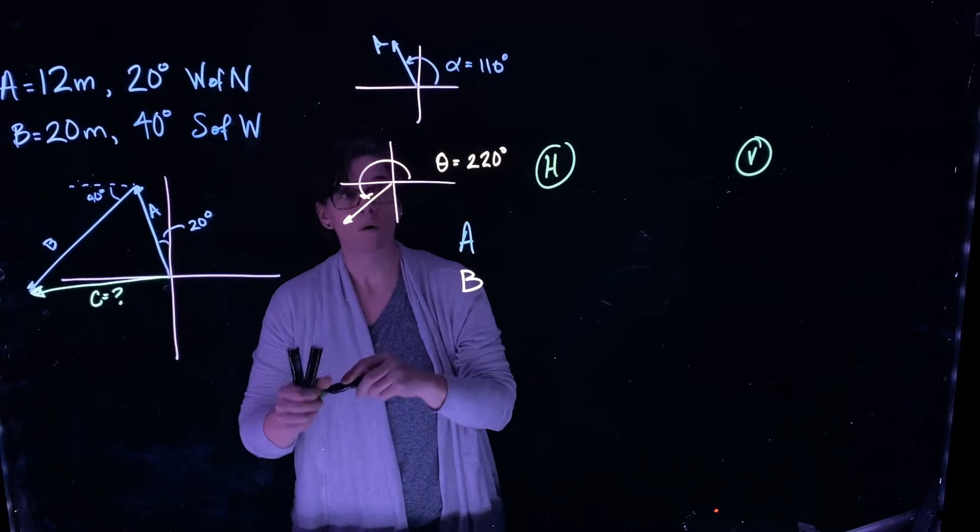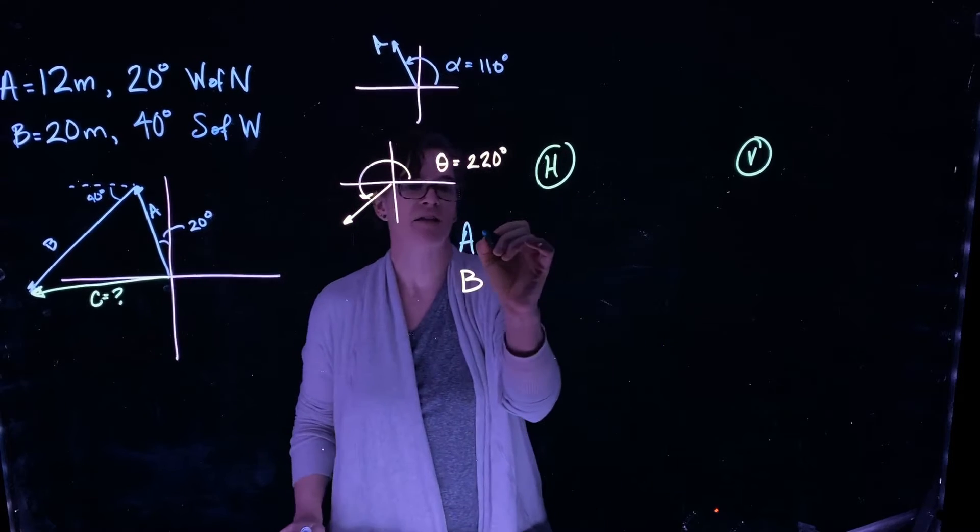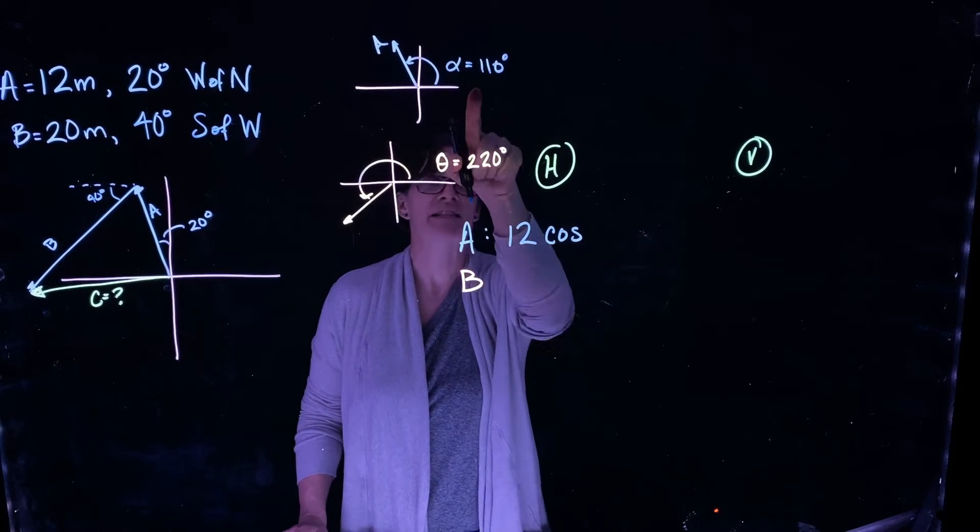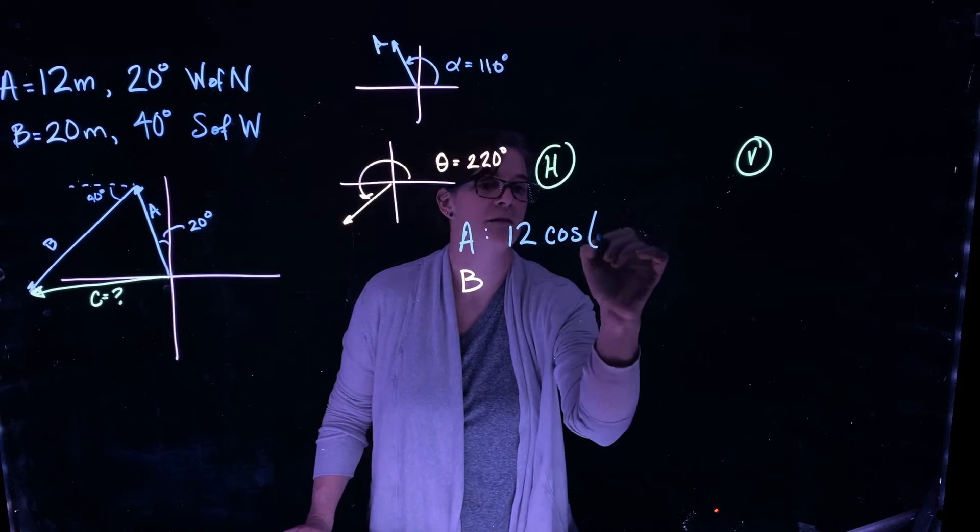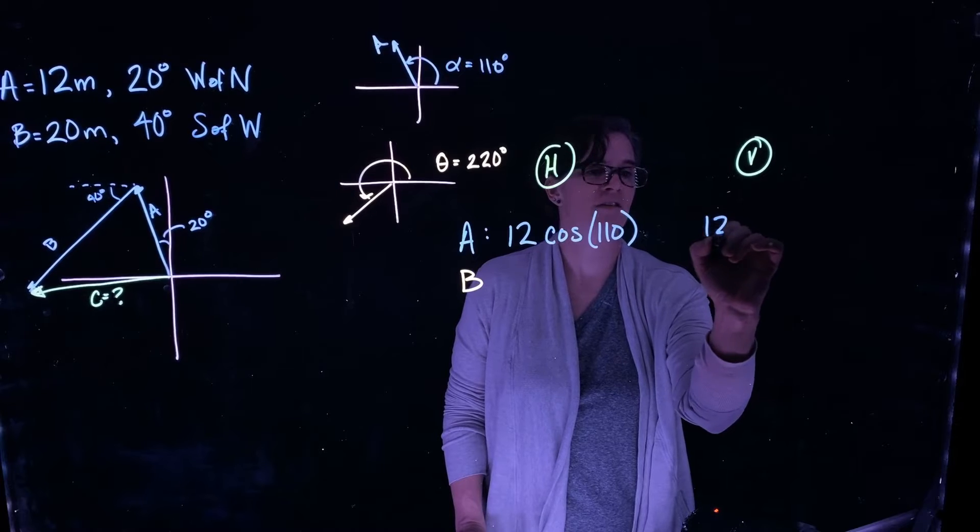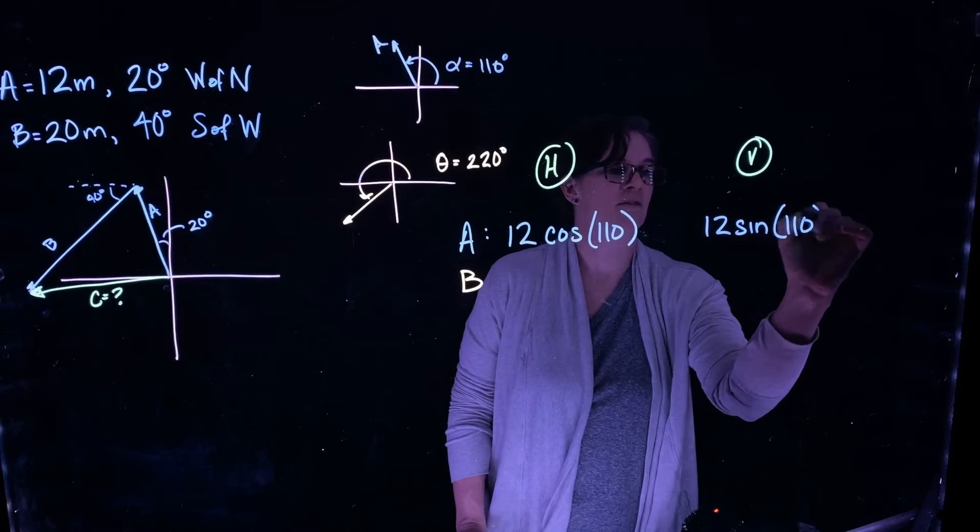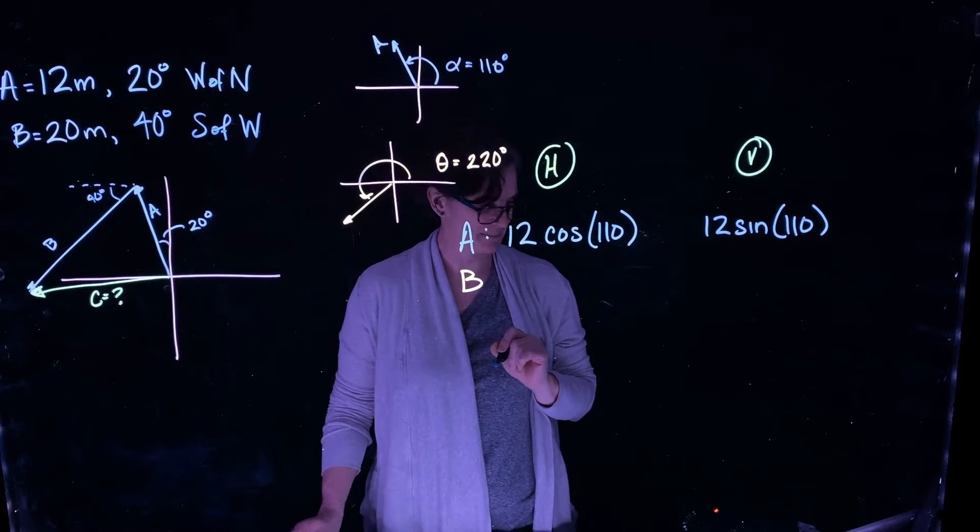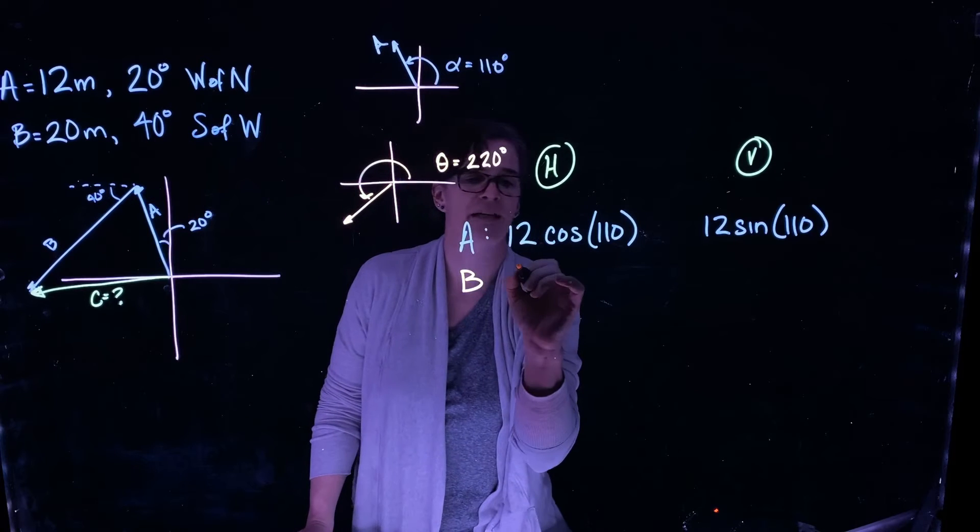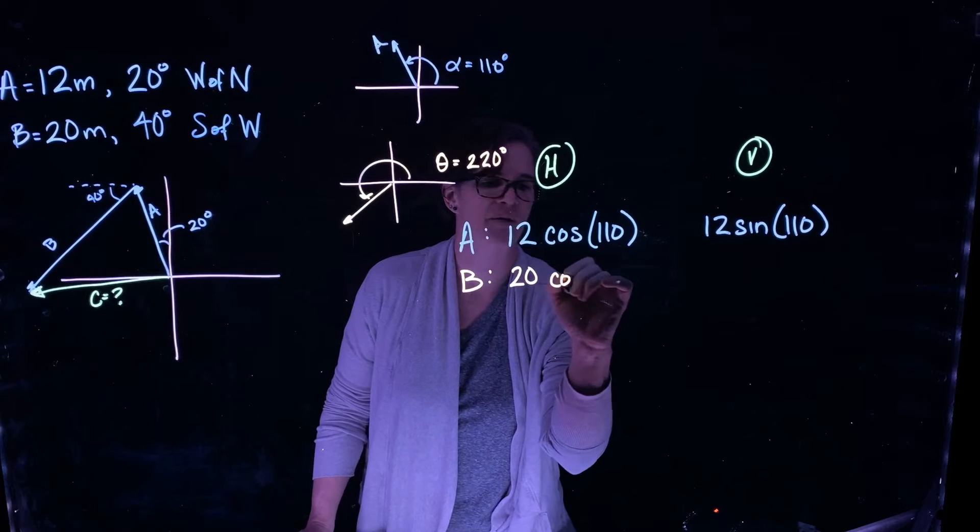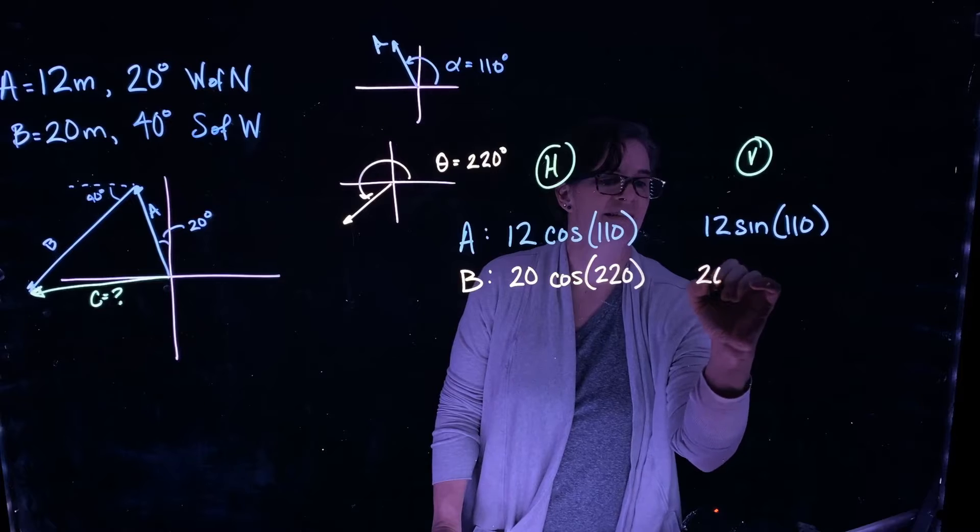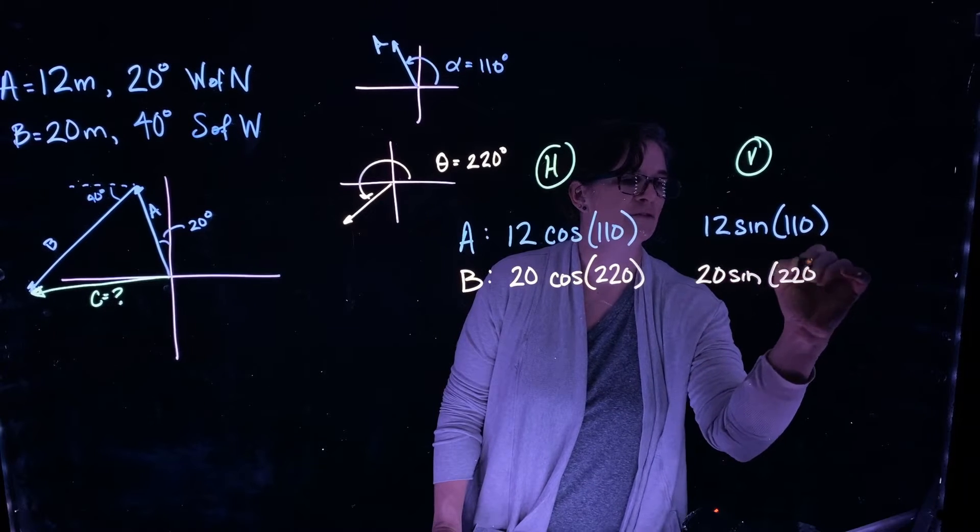So vector A, what is its horizontal component? Well, vector A's horizontal component is its magnitude 12 times the cosine of its angle relative to that positive x-axis, 110. And its vertical component is 12 times the sine of its angle relative to the positive x-axis. What about vector B? Well, vector B is its magnitude 20 times the cosine of 220, and 20 times the sine of 220 for its vertical component.